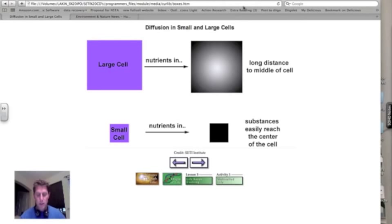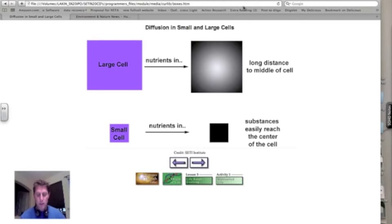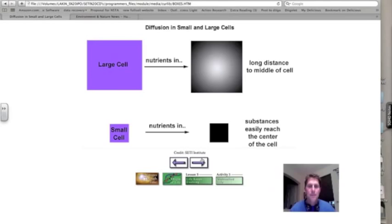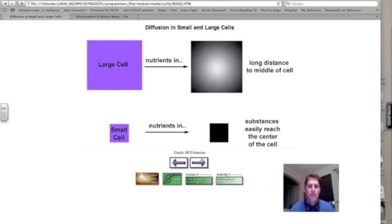Well, are there any advantages to being single-celled? Sounds like multi-celled is the way to go. Well, let's take a look at this next graphic and you tell me. Obviously there is a huge advantage to being single cell. In fact, if we look at the biomass on the earth, most of our biomass is in fact single cell: bacteria, archaea, algae, some fungi, protists, even some animals are single cell.